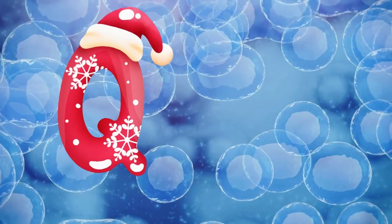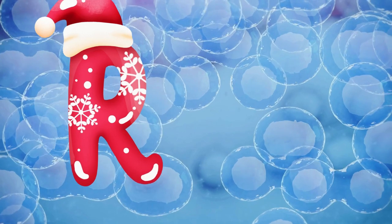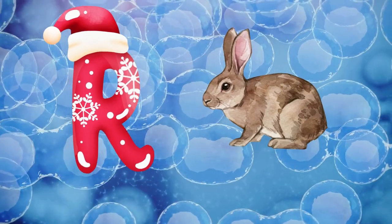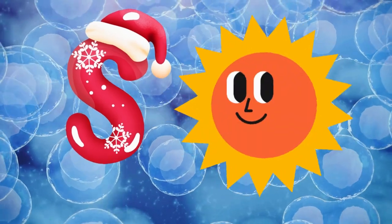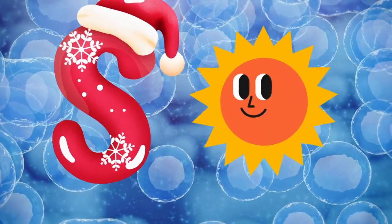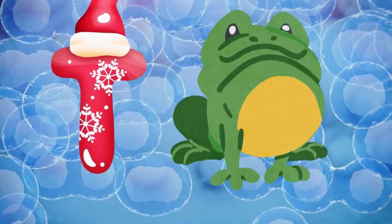Q is for queen, q-q-queen. R is for rabbit, r-r-rabbit. S is for sun, s-s-sun. T is for toad, t-t-toad.